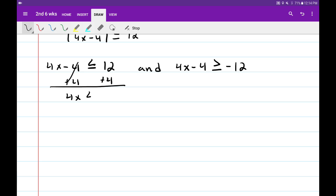That cancels. I get 4x less than or equal to 16. Then divide by four. I'm going to get x less than or equal to four.